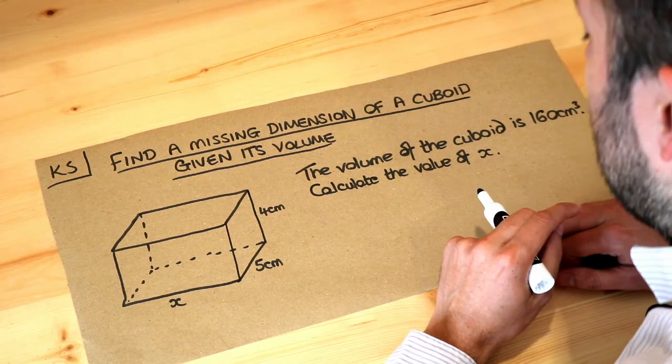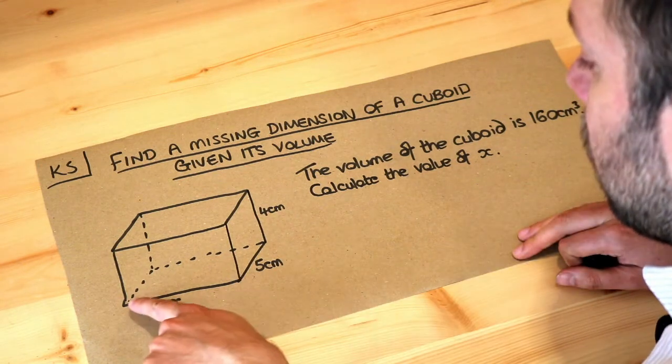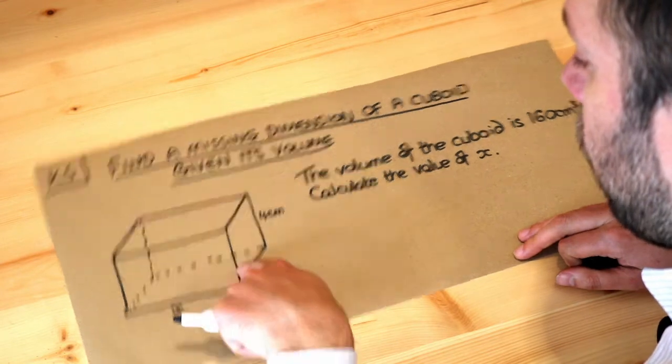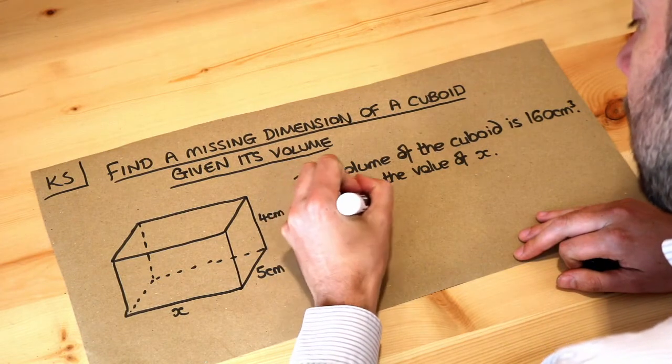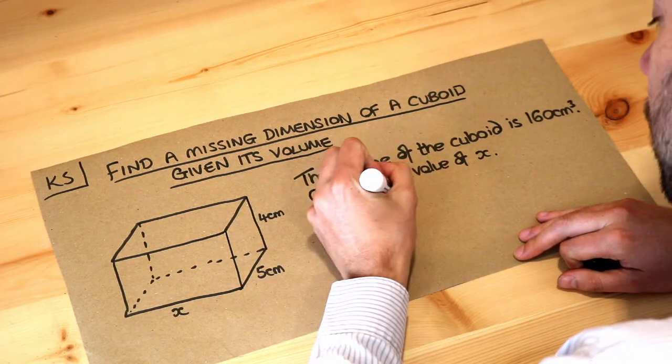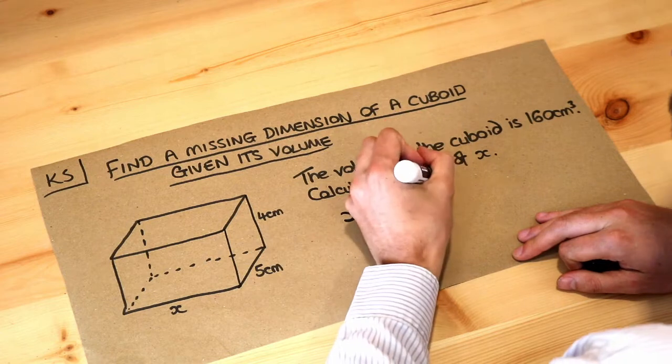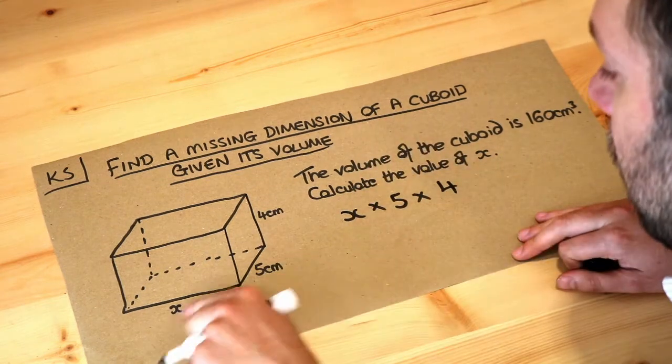Now remember how we find the volume of a cuboid. We just do the length times the width times the breadth, so we times those three different lengths together. So we would do x times the 5 times by the 4 and that would give us the volume, those three times together.